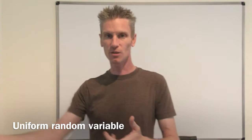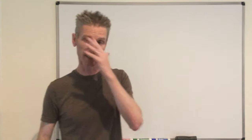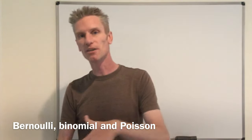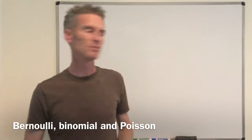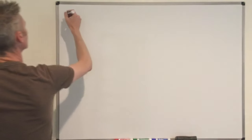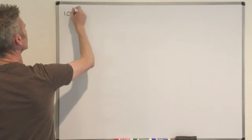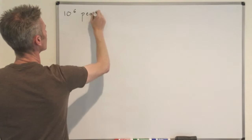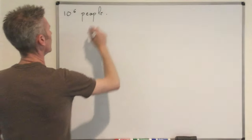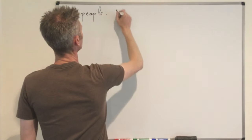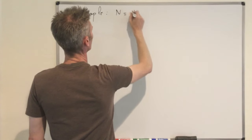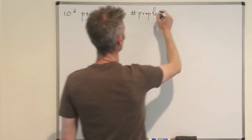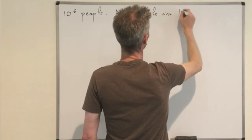We'll see the uniform random variable here — that's the time at which people arrive — but it's also connected to Bernoulli, binomial, and Poisson. So we have 10^6 people, 1 million people. N is going to be the number of people who arrive in the first hour.